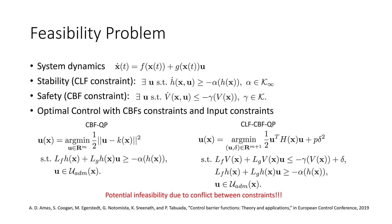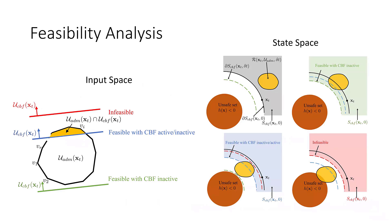However, infeasibility can still occur due to conflict between the CBF constraint and the input constraint. We discuss how this infeasibility occurs: it can be understood as a conflict in the input space between the input constraint and the CBF constraint. If the intersection of the feasible regions is non-empty, the problem is solvable. Another perspective is through the state space: whether the reachable space and the safe region confined by the CBF constraint have non-empty intersection. We did a formal analysis in both input space and state space, showing that the choice of the decay rate of CBF affects whether the problem is feasible and whether the constraint is active.